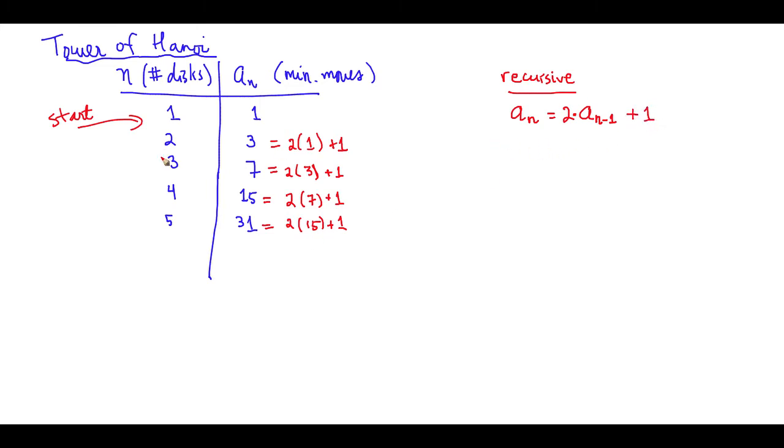Now this only applies when n is two or greater. So we should clarify that this is for n greater than or equal to two. So we remember that we need a starting point somewhere. And so our starting point for the Tower of Hanoi must be at one.